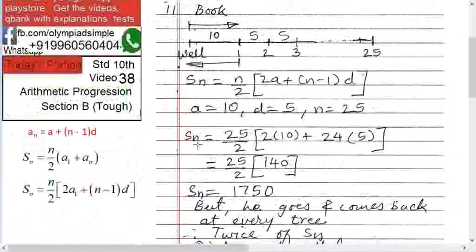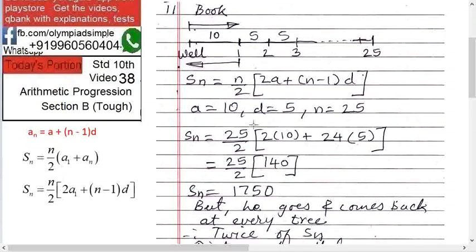Now solve this. Therefore SN equals to 25 upon 2 into 2 into 10 plus 24 into 5. 25 minus 1, 24 into 5. Solve this. You will get SN equals to 1750.